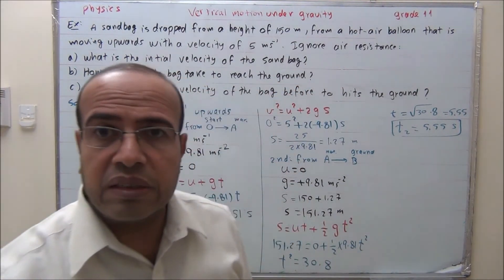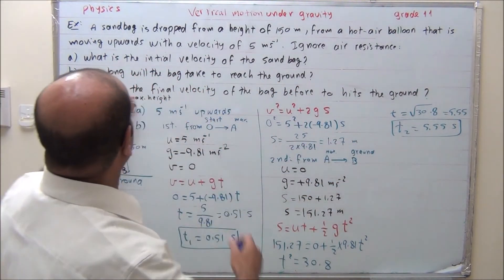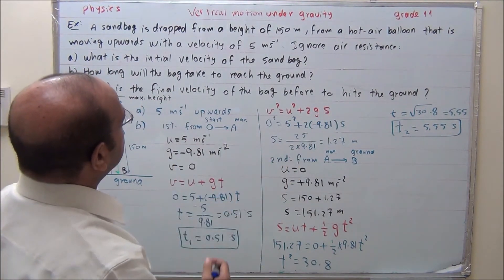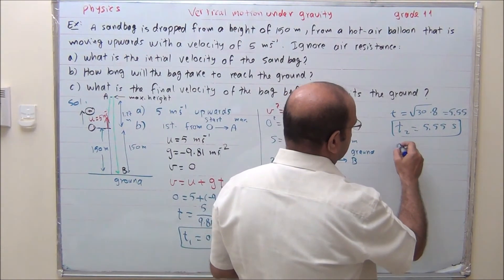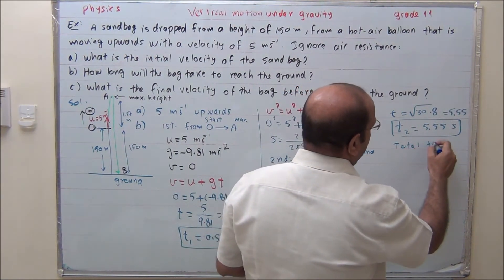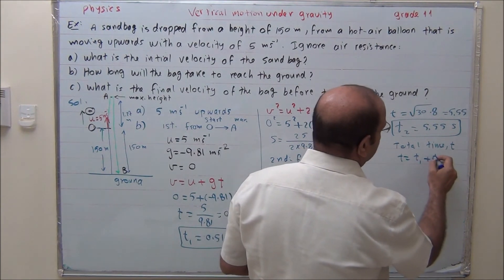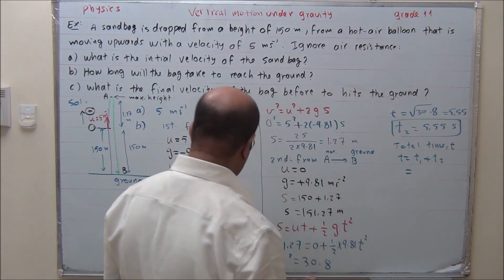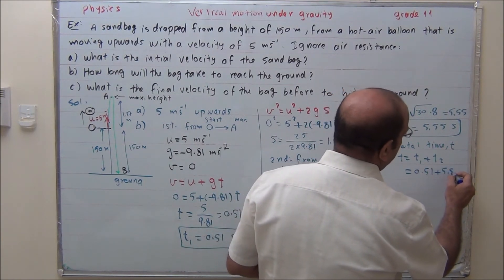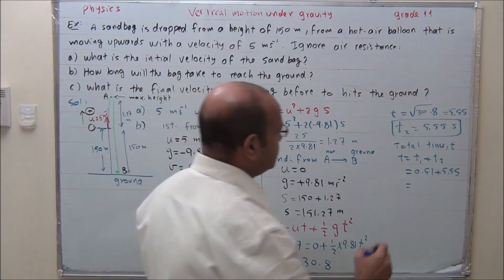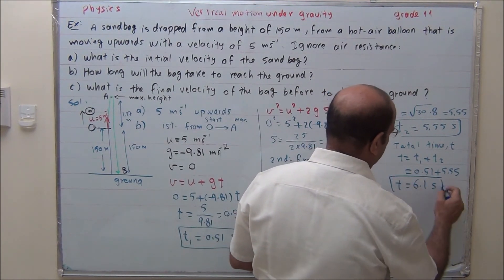What is the total time? The total time T equals T1 plus T2. T1 is 0.51 seconds plus T2 of 5.55 seconds, giving a total time of 6.1 seconds.